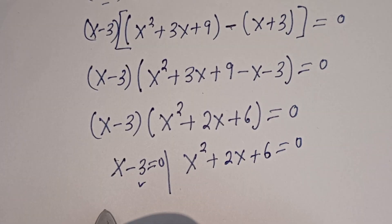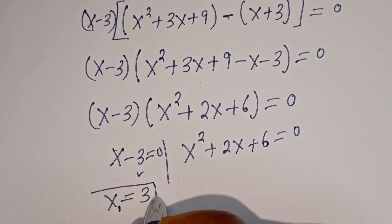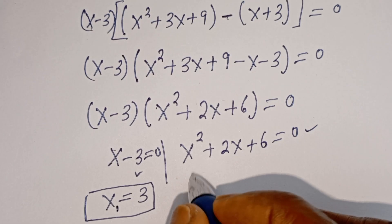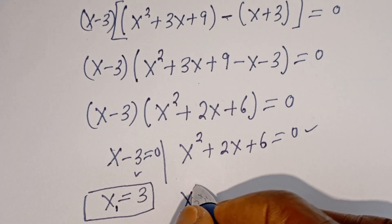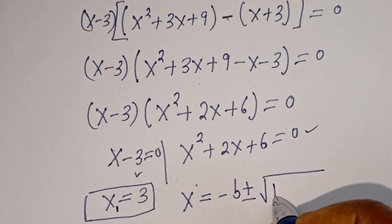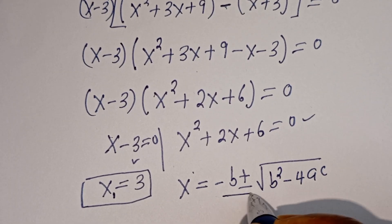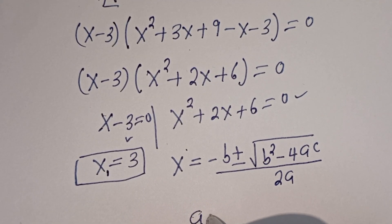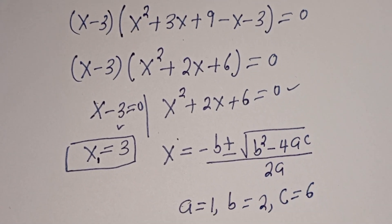From the first case, S equals 3. Let's call this S1, the first value. From the second case, S squared plus 2S plus 6 equals 0, which is a quadratic equation solved using the quadratic formula: S equals negative B plus or minus square root of B squared minus 4AC, divided by 2A. From this equation, A equals 1, B equals 2, C equals 6.